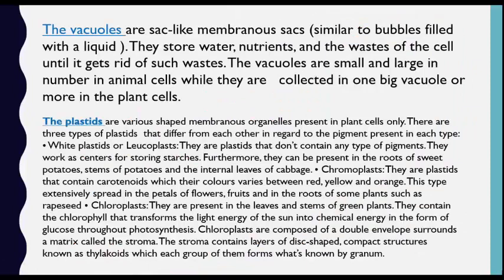The vacuoles — they are sac-like membranous sacks similar to bubbles, filled with a liquid. They store water, nutrients, and the waste of the cell until the cell gets rid of such wastes. Vacuoles are small and large in number in animal cells, while they are collected into one big vacuole or more in plant cells.